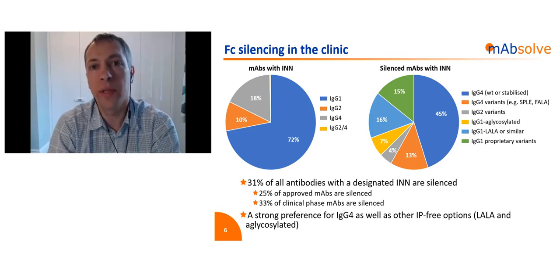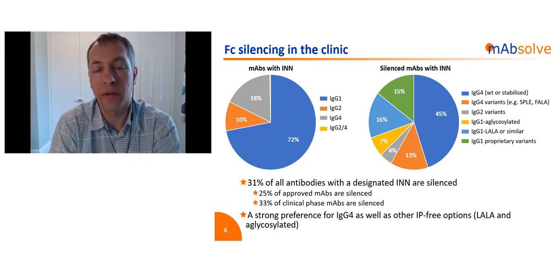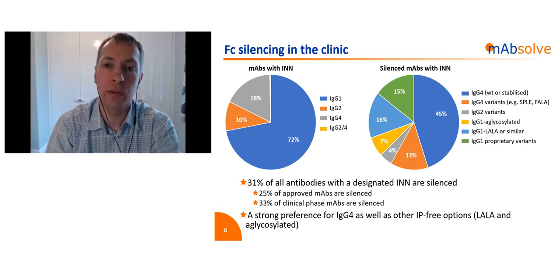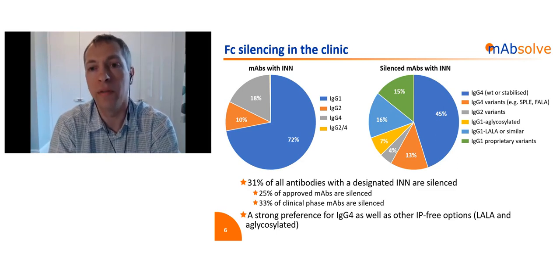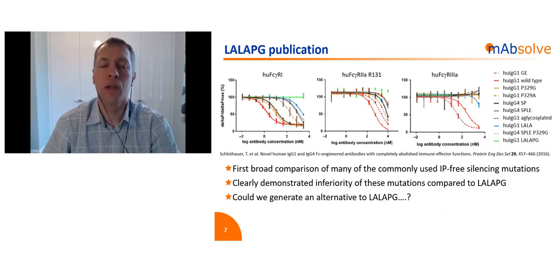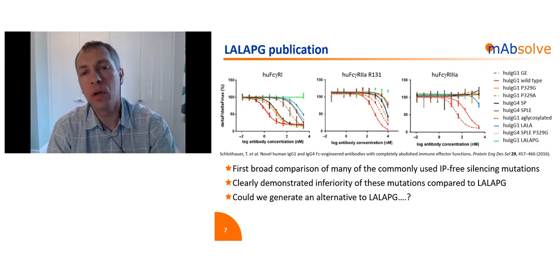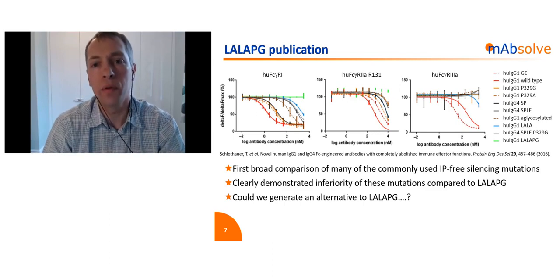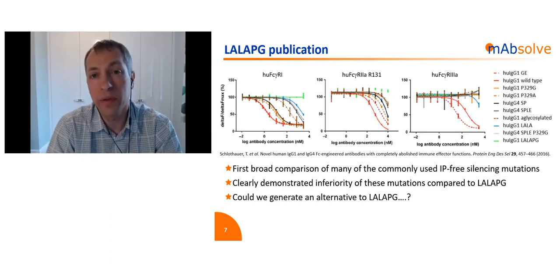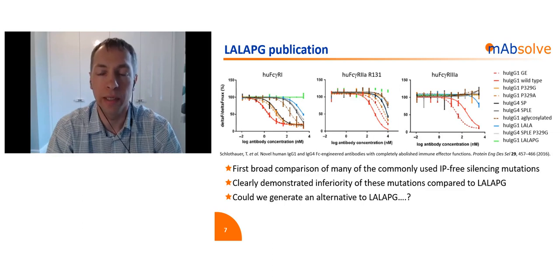There have been a small number of groups working on their own proprietary, mainly IgG1-based silent variants. The wider community didn't really start to acknowledge the potential risks of inefficient silencing until 2016, when Roche published work on their novel silencing variant called LaLaPG. This was probably the first time a group had taken a serious effort to compare their proprietary variant not only to wild-type IgG1, but also to all the widely used IP-free options being utilized in the clinic at the time.